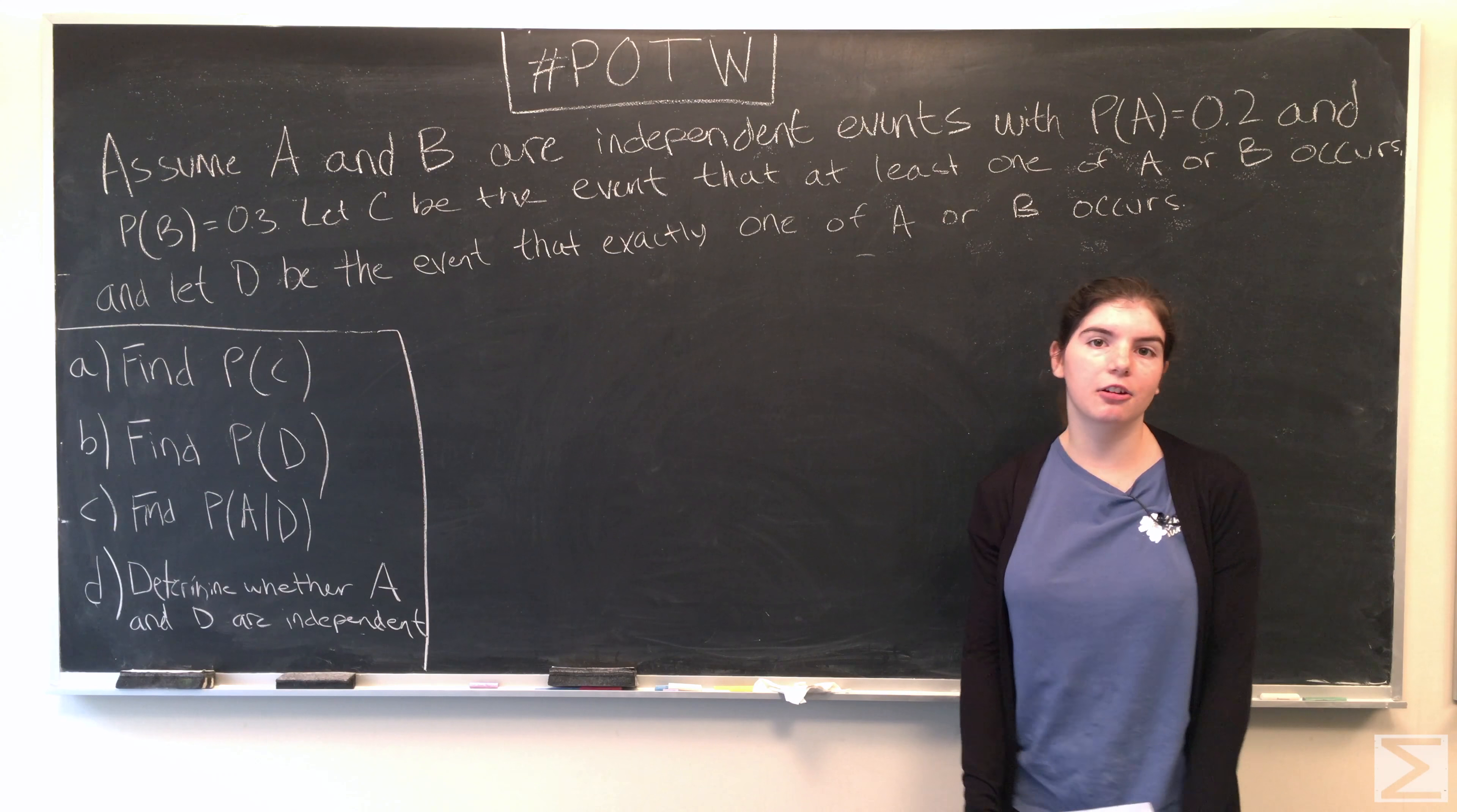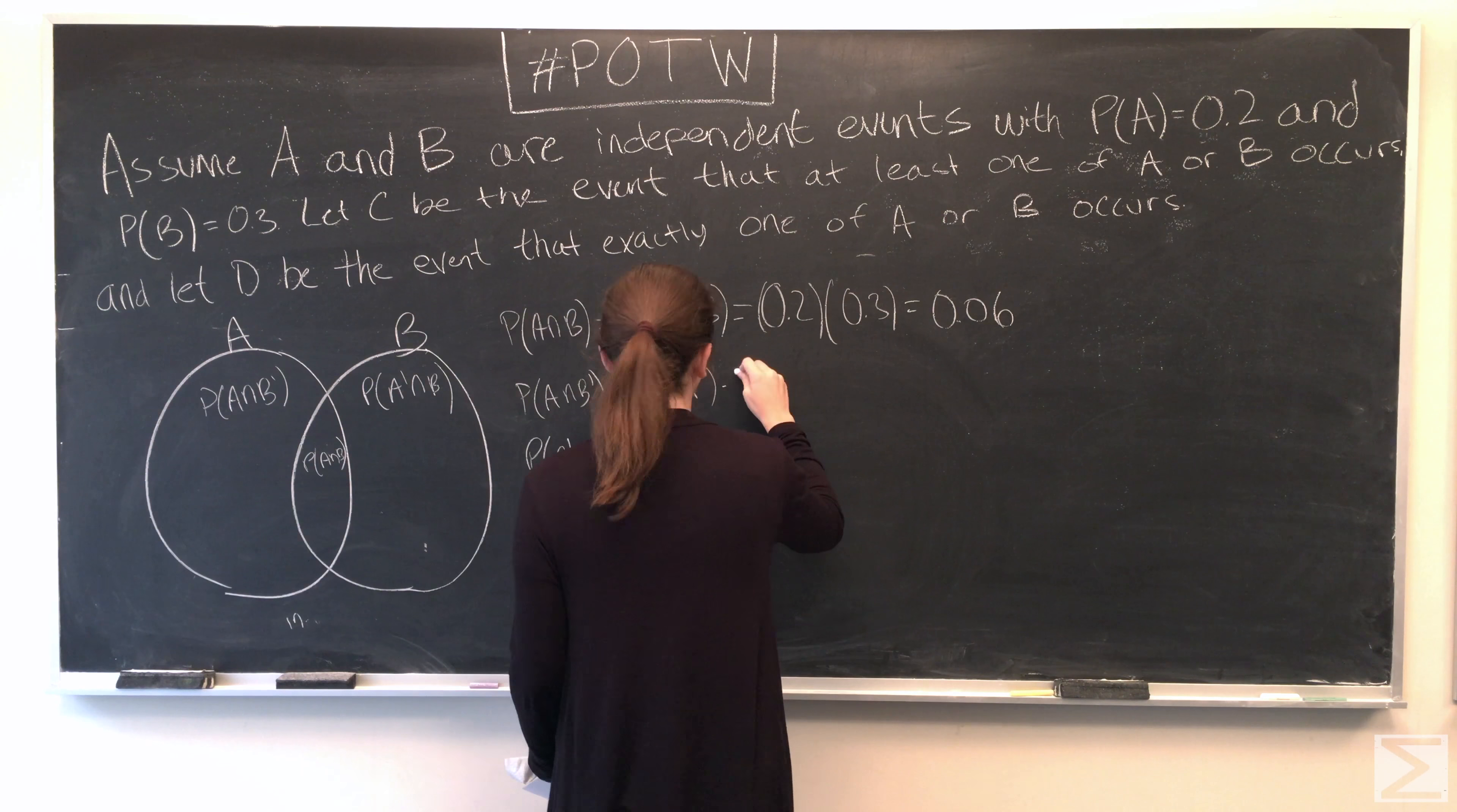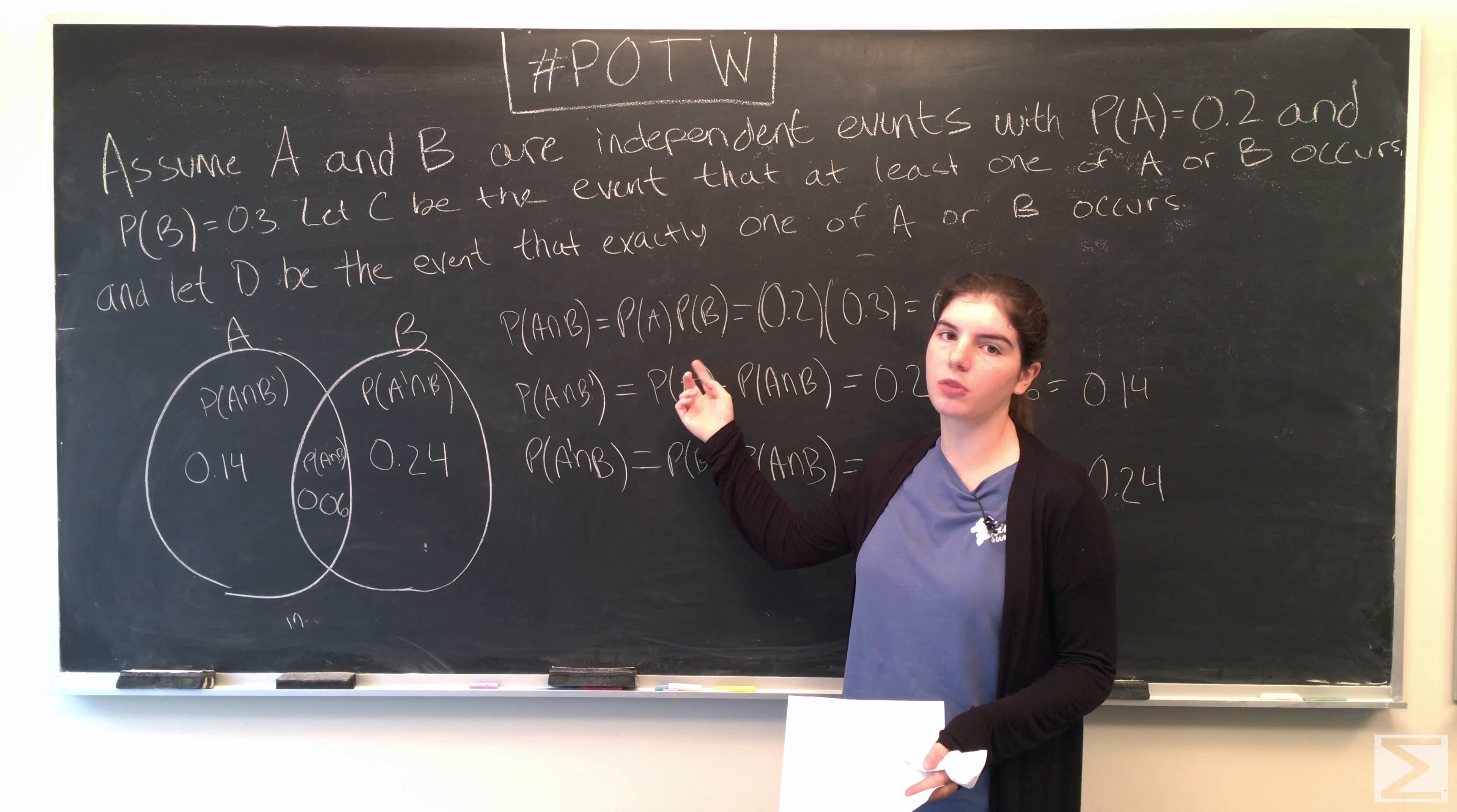First thing we're going to do is draw our Venn diagram. So when two events are independent, the probability of their intersection is the product of their individual probabilities.